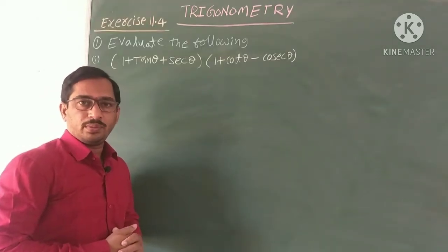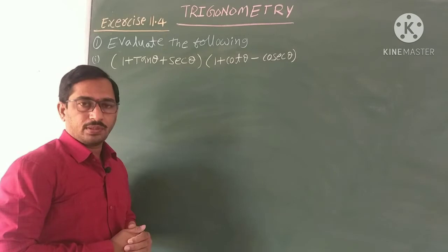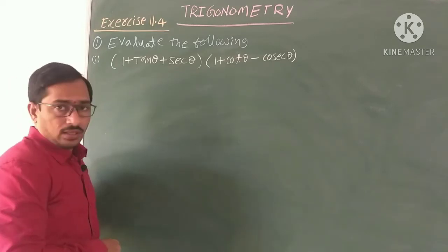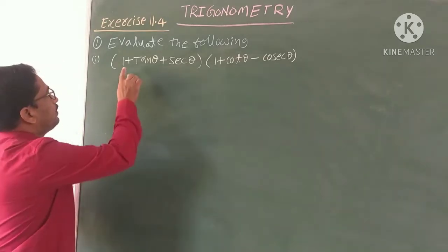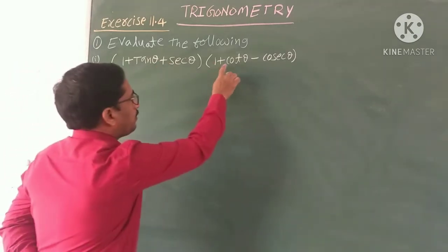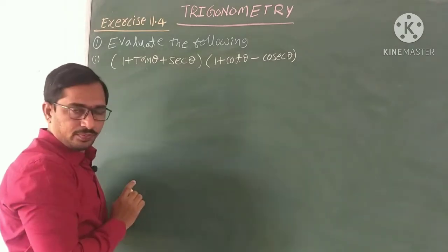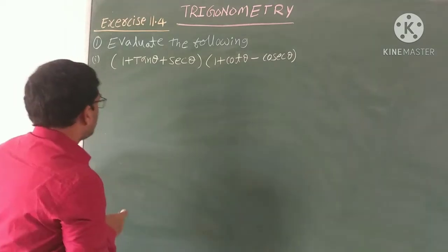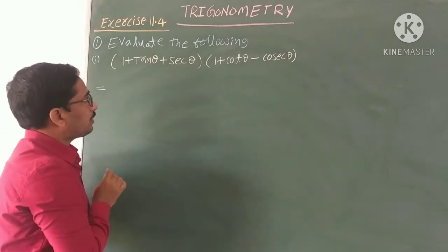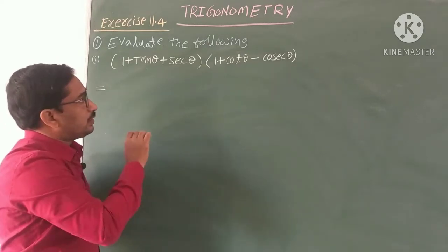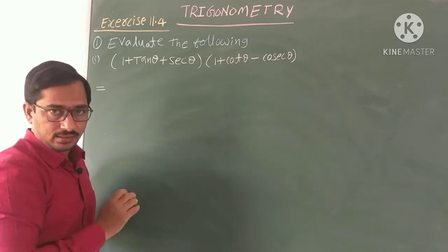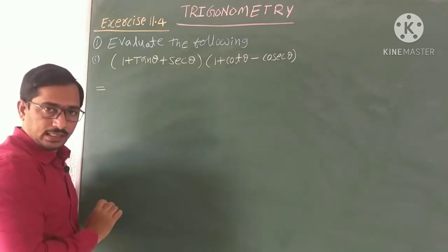Now see Exercise 11.4 based on trigonometric identities. First problem — evaluate: (1 + tanθ + secθ)(1 + cotθ - cosecθ). We have to find the value. The most effective approach in trigonometry is to convert cosec, sec, cot, tan all in terms of sin and cos. So express all these in terms of sin and cos.